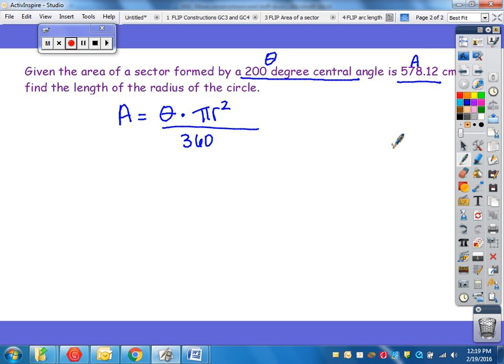So I'm going to plug in what I'm given. Area of sector goes in for A, so 578.12 equals theta, which is 200 degrees, multiplied by pi r squared, over 360.